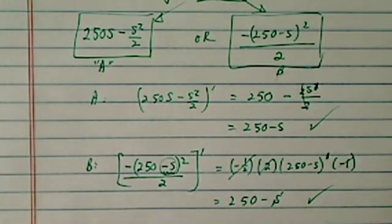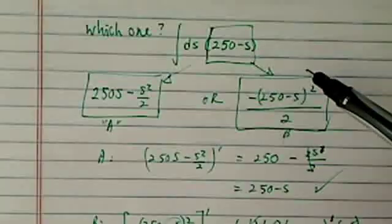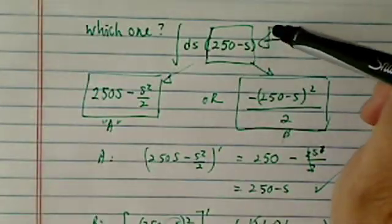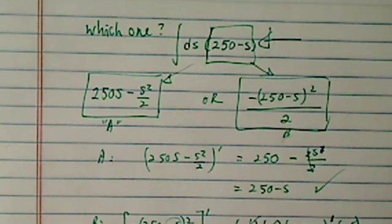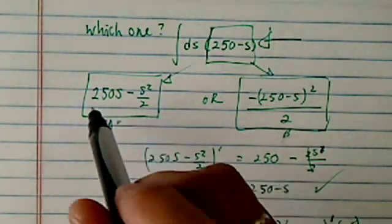So both answer A and B, both of them work. So now the question is which one? As a matter of fact, both A and B are correct, and here's why. When we take integration here, we do have a constant of C. So for the constant of C here, we actually need to add a constant.